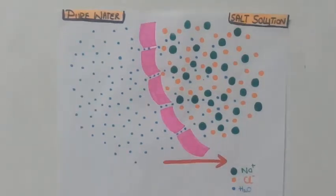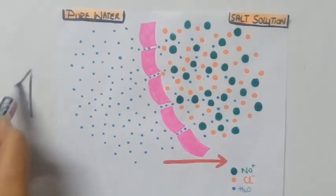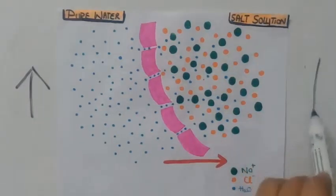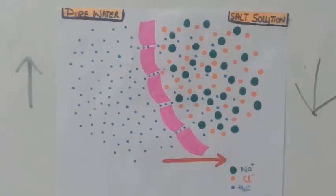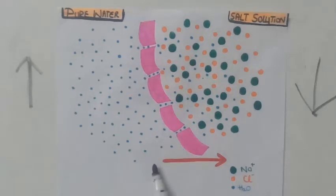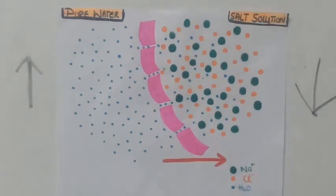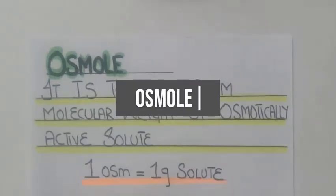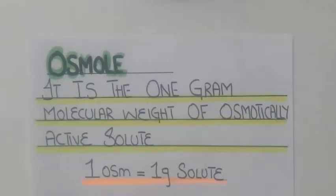But when a concentration difference of water develops — as shown in this diagram — on one side of the membrane we have more water concentration and on the other side we have less water concentration. This concentration difference causes net movement of water from the high water concentration area towards the low water concentration area through the semi-permeable membrane, and this net movement of water is called osmosis.